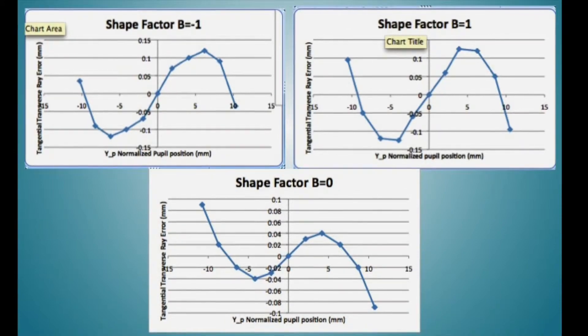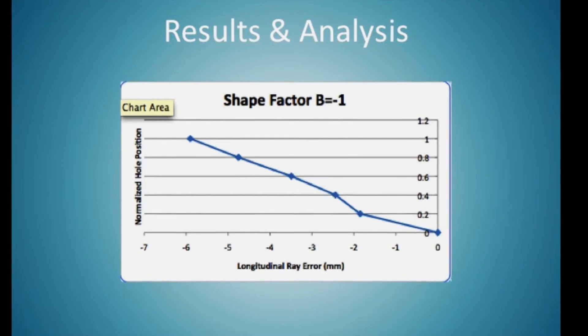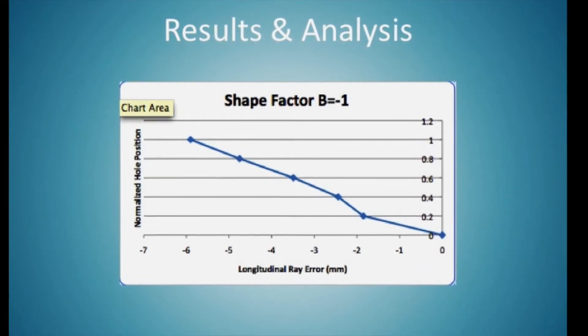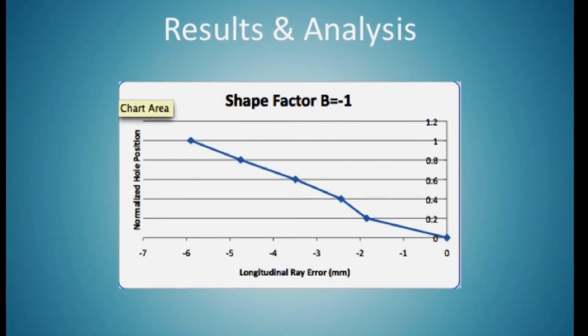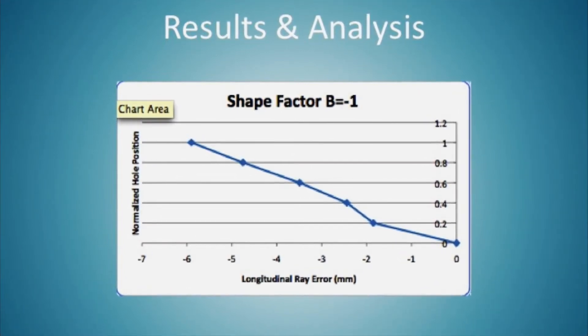From our longitudinal ray error plot, we found that delta z is 5.9 mm, which is pretty close to the value of 5.75 mm that we found using Zemax. Now, it's not as parabolic as we would have hoped, partly because that zero point is very difficult to measure.